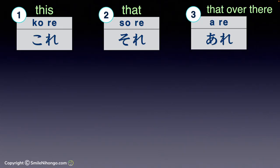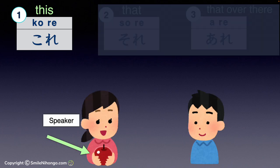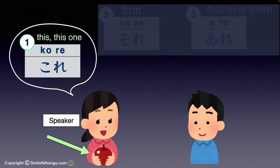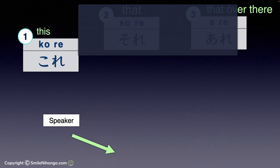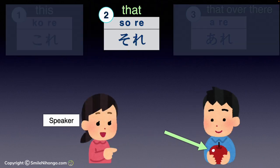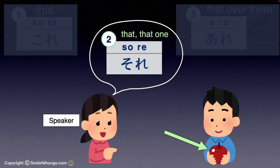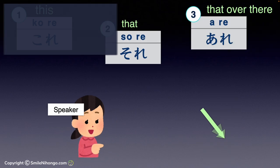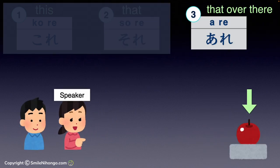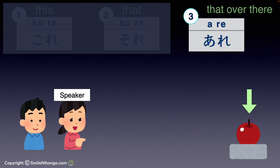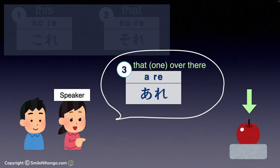In the previous lesson, you learned these three pronouns: これ、それ、あれ. Here is a quick review. これ refers to something closer to the speaker — the same as 'this' or 'this one' in English. それ refers to something closer to the listener, or somewhat at the same distance — the same as 'that' or 'that one'. あれ refers to something far away from both the speaker and the listener, meaning 'that over there' or 'that one over there' in English.